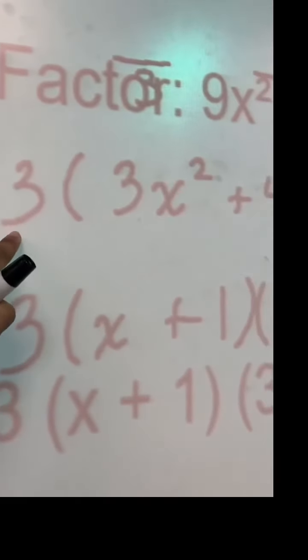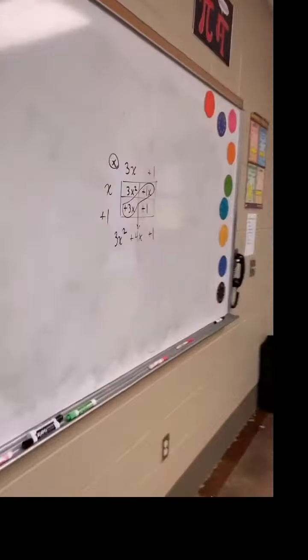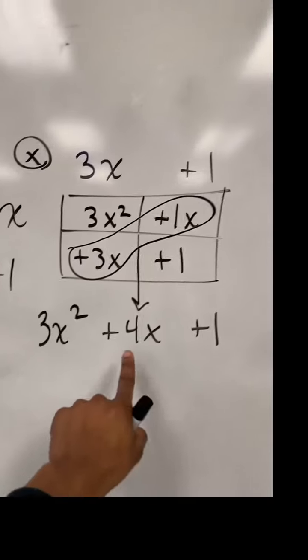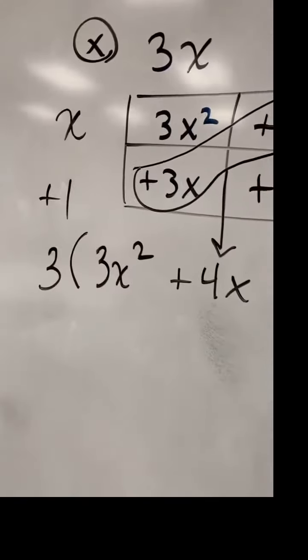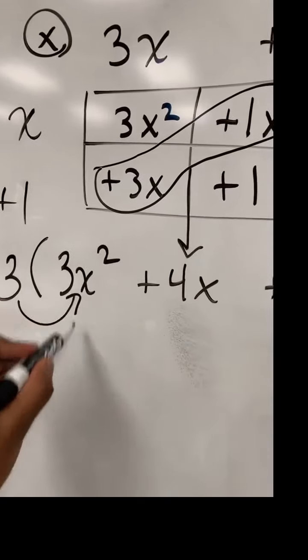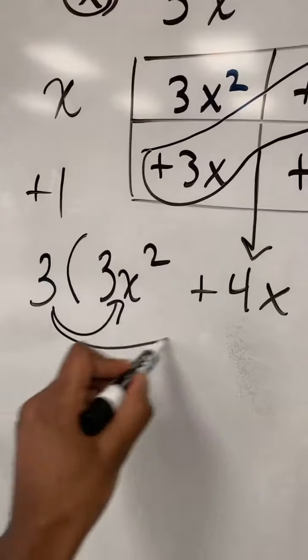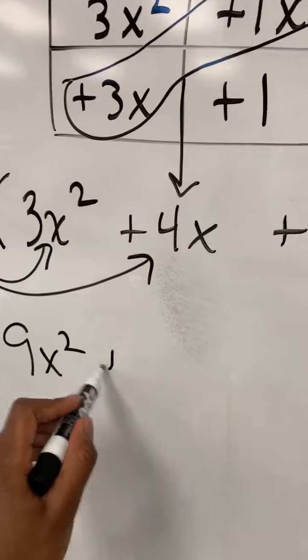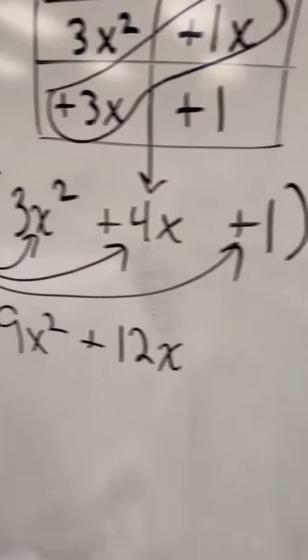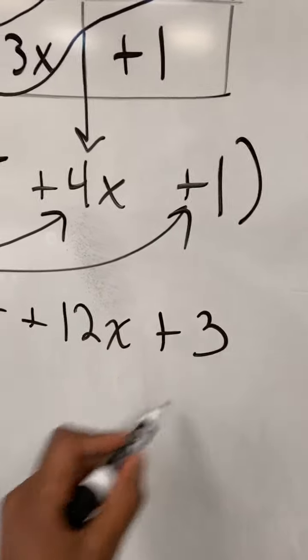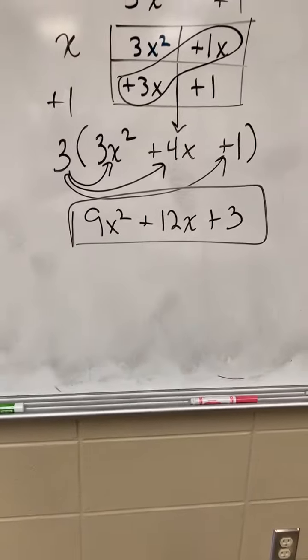Now we have one more thing to verify. Remember, we did factor a 3 out at the very beginning of the problem. So when I'm verifying my work and I take my two parentheses and multiply them together to get that, I cannot forget that I had a 3 at the very beginning. Now if I start multiplying, I get 9x². Now if I multiply these two together, I get a positive 12x. And then if I multiply those two together, I get a positive 3.